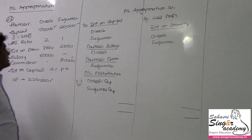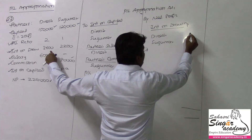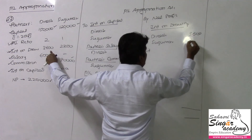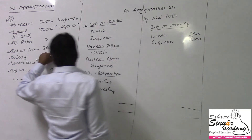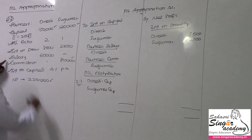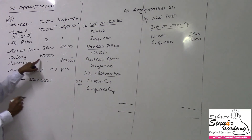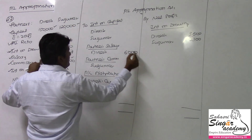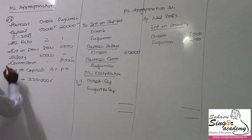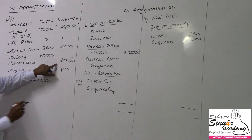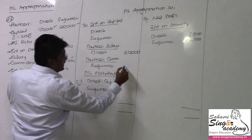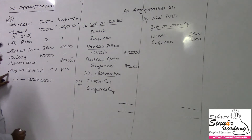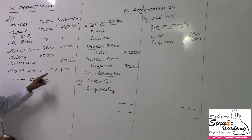Profit and loss ratio is 2 is to 1. Interest on drawings: 3,600 for Dinesh and 2,100 for Sugumar. Salary for Dinesh only: 60,000. Commission for Sugumar only: 80,000. Interest on capital is calculated at 4%.